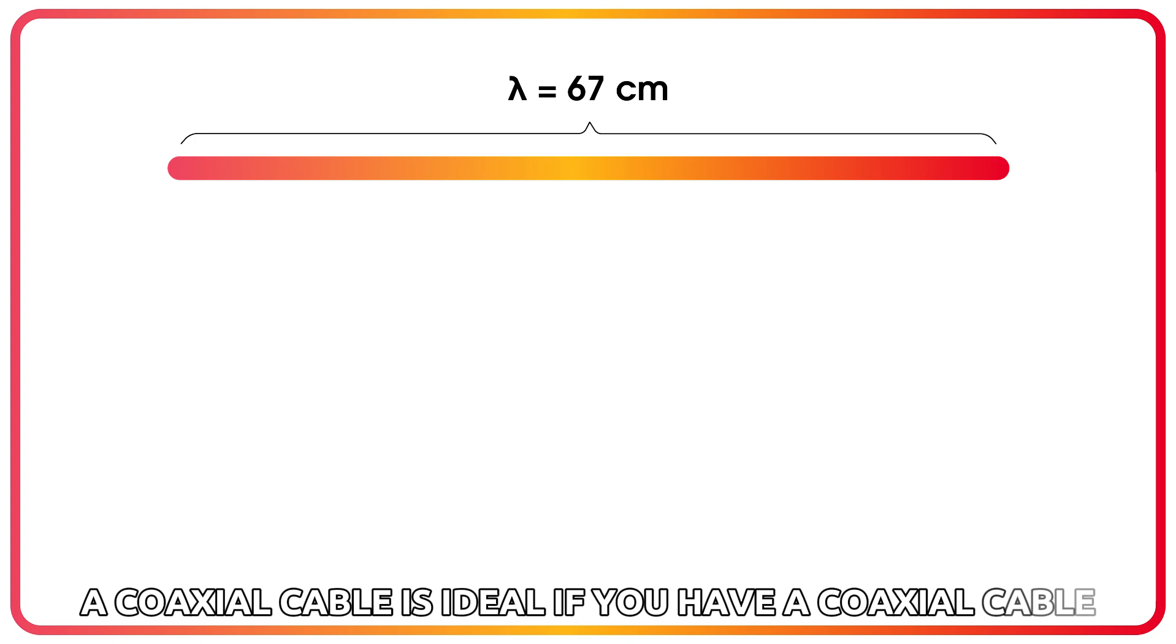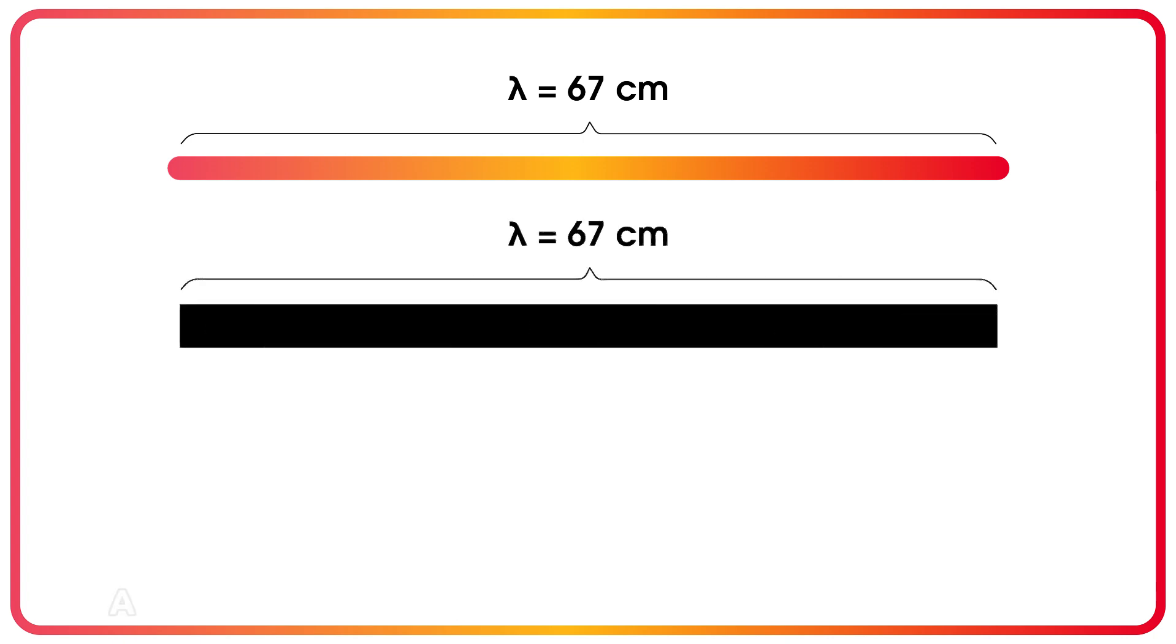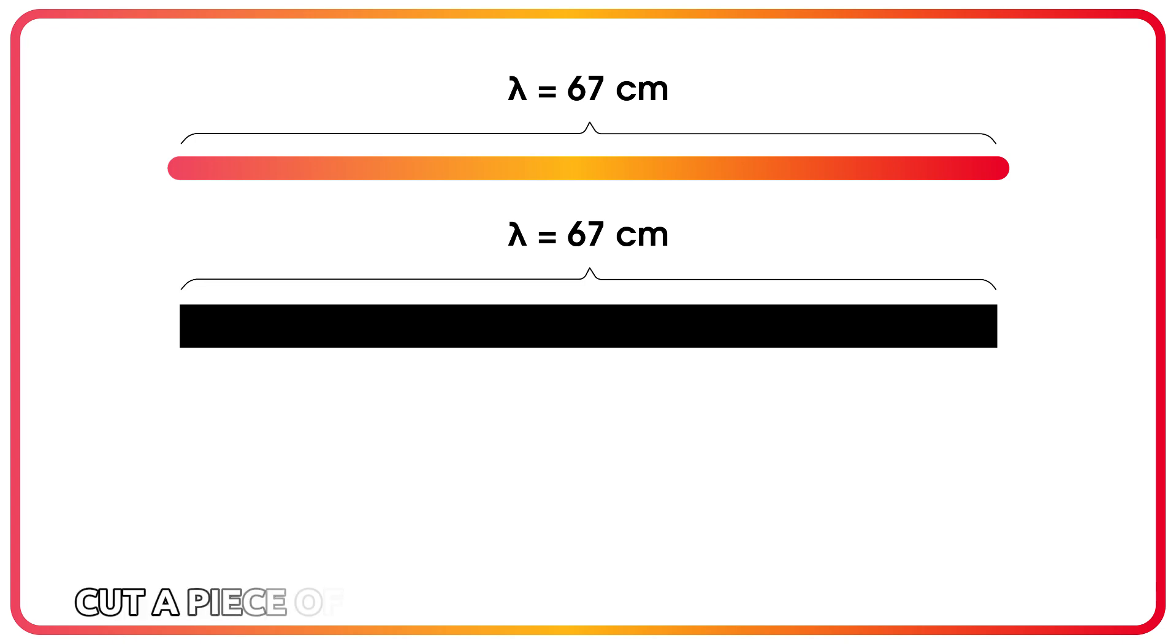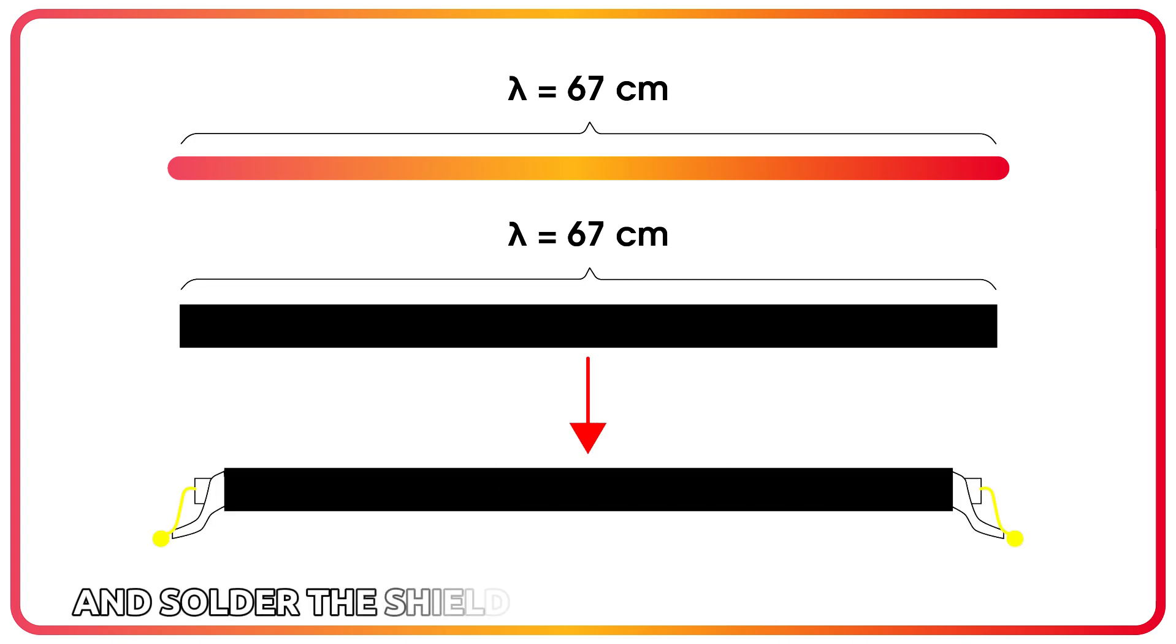If you have a coaxial cable, and you probably do since you've decided to connect an antenna, use it as the antenna element. The cable's impedance and its internal velocity factor do not matter. Cut a piece of coaxial cable to the required length. Strip about a centimeter of the shielding and the central conductor, and solder the shield and the conductor together at each end.